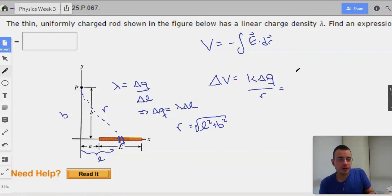I'm gonna call this length L. This will be B. So, R will be L squared plus B squared, square rooted. Now we're gonna have K lambda delta L over L squared plus B squared, square rooted.